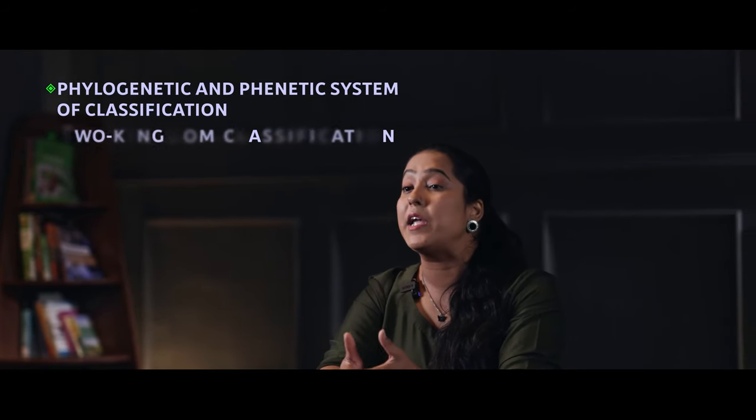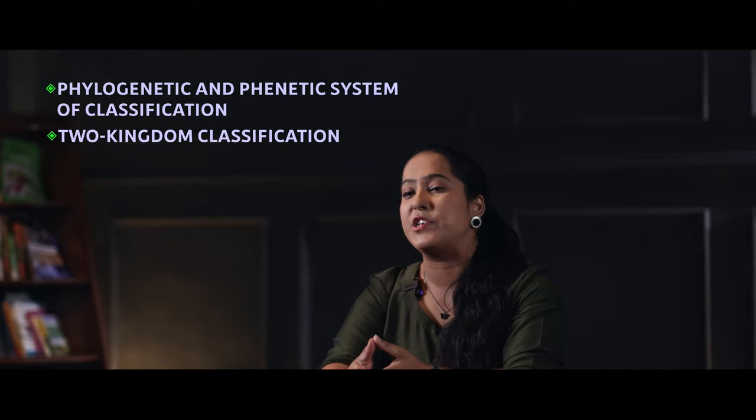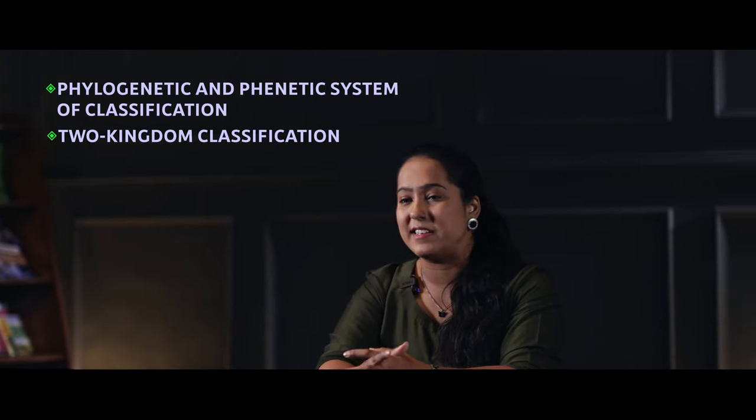What are the different classification systems? Why is the five kingdom classification the best classification system? What were the different criteria followed in that system?